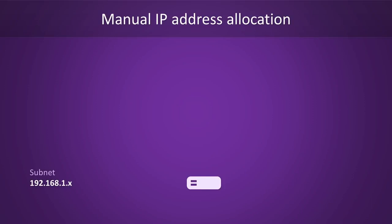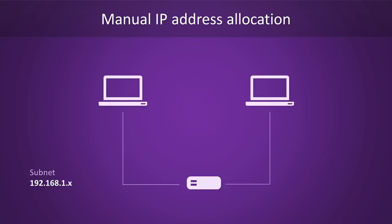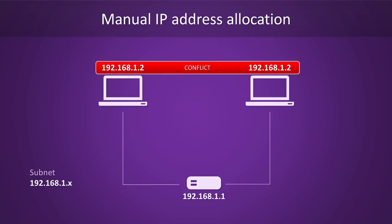In our example network, every host will have an address that starts with 192.168.1. At the center of our network, we have a router that is wired up to two hosts. A common way to assign addresses would be to give our router the .1 address and to give the hosts the .2 and .3 addresses respectively. If someone accidentally gave the same IP address to both computers, we'd have an IP conflict on our hands.